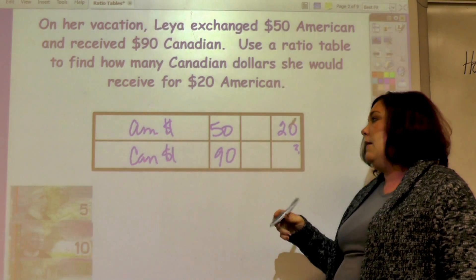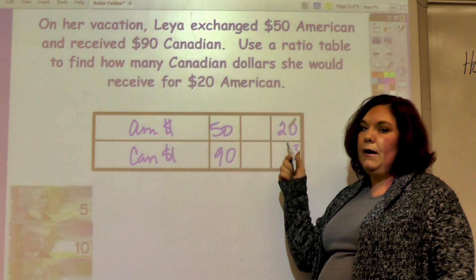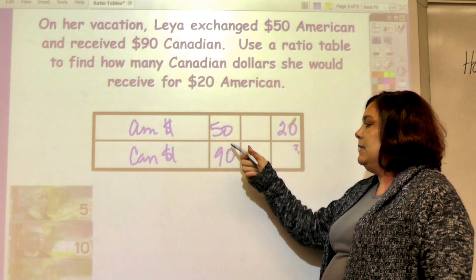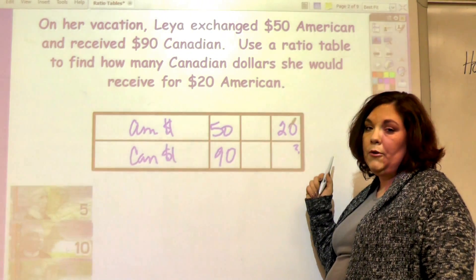I have to look at this and say, is there anything I can divide by to get to 20? Well, not evenly, so I probably need to simplify before I multiply.